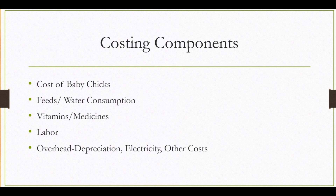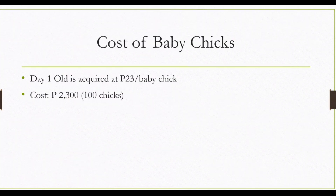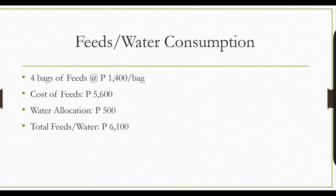It is very important to note these expenses because they will have a significant impact on your bottom line or your profitability in raising chickens. The first component is the cost of baby chicks. We acquire them at 23 pesos per baby chick. The total for 100 chicks used in our costing is 2,300 pesos.